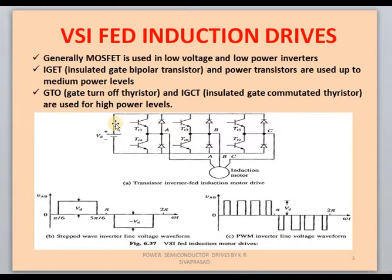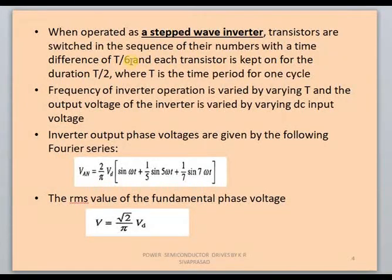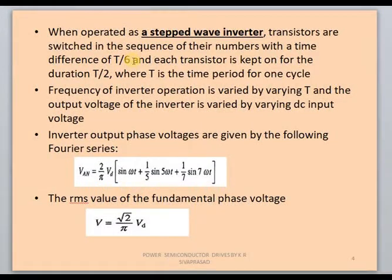If we consider a square wave inverter, the switching sequence will be T/6 — that means every switch will turn on with a time period of T/6. If you consider 2π as the time period, the switching sequence will be π/3, which means 60 degrees. For every switch there is a difference of 60 degrees time gap in the switching sequence.